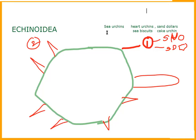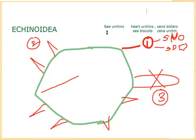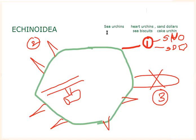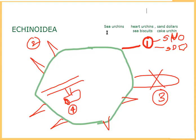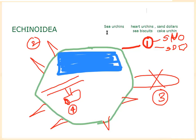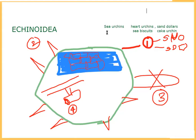Echinodermata is special for arms, but arms are absent in these organisms. In the ambulacral water vascular system, the tube feet are having suckers — tube feet bear suckers. The calcareous ossicles of the body unite to form a rigid test or corona or case.